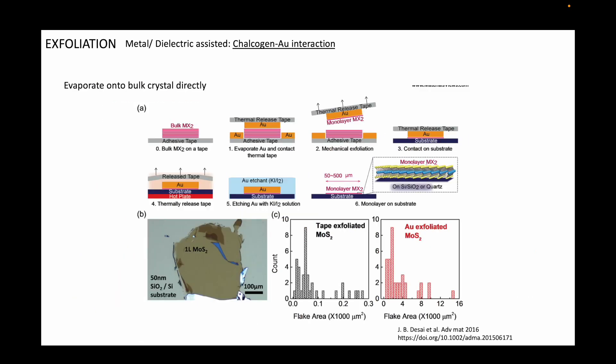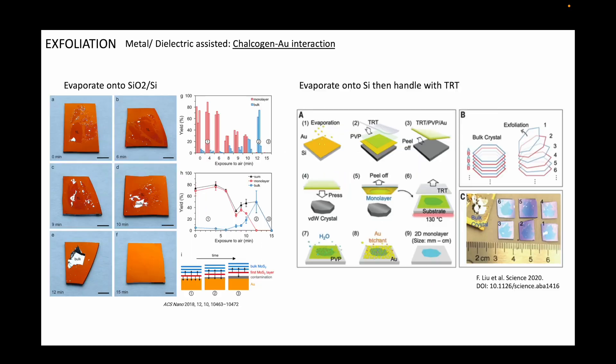In this paper, a thick layer of gold is evaporated directly onto the bulk crystal. Then by using a thermal release tape, the gold layer along with the topmost monolayer is peeled away from the bulk crystal. Then the monolayer is made contact with a dummy substrate of choice and heated to release the thermal release tape. Finally, the gold is selectively etched away in a KI solution. The improvement in the yield is impressive with this method, and I have had great success with this method as well personally. I've tried many of the gold-assisted exfoliation methods, and this is by far the easiest to implement, and yields in large areas of monolayer flakes.